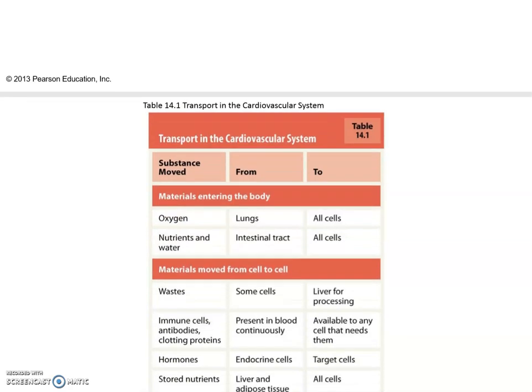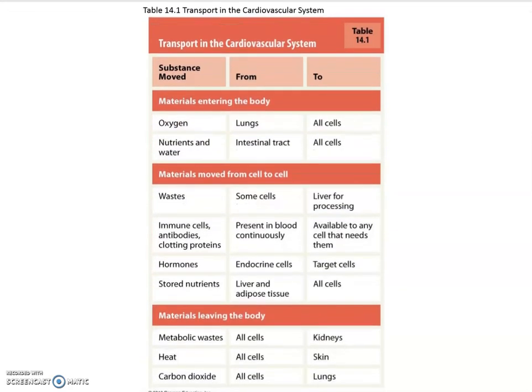Let's first take a look at what the cardiovascular system is doing for you. It's mostly about moving stuff. First is oxygen — we need to move oxygen from the lungs to all the body cells. Then we need to move nutrients and water around. We also need to pick up the waste and get rid of that.